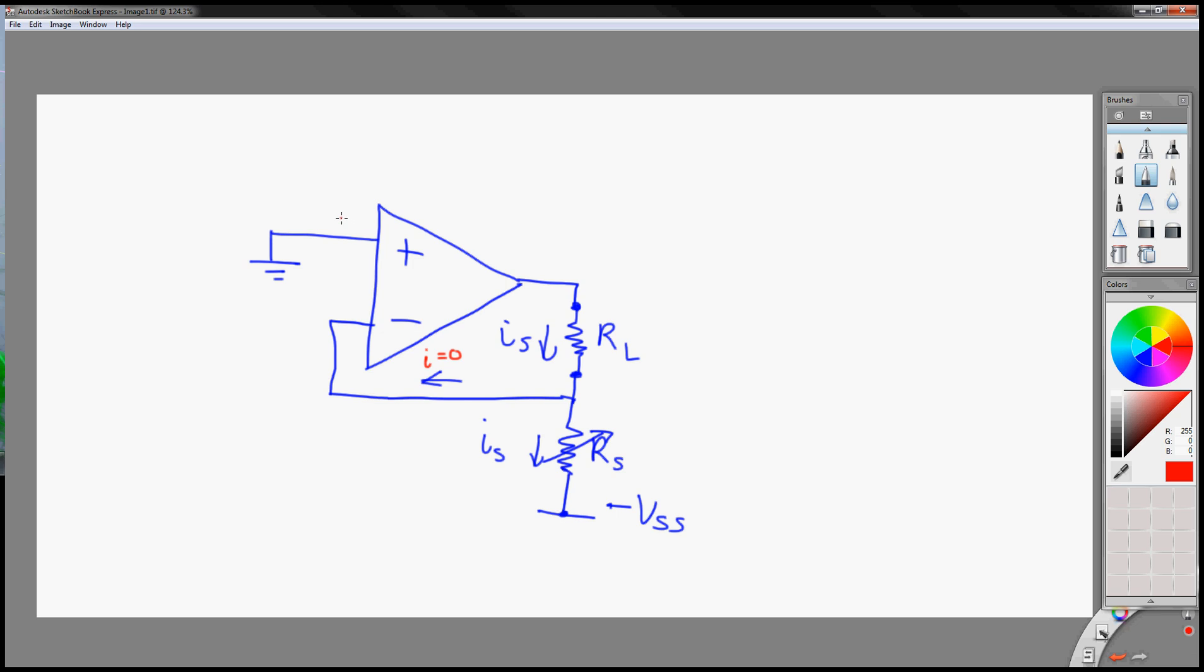And we know that this voltage here, called Vx, is the same here at this terminal, since we are assuming this is an ideal op amp.